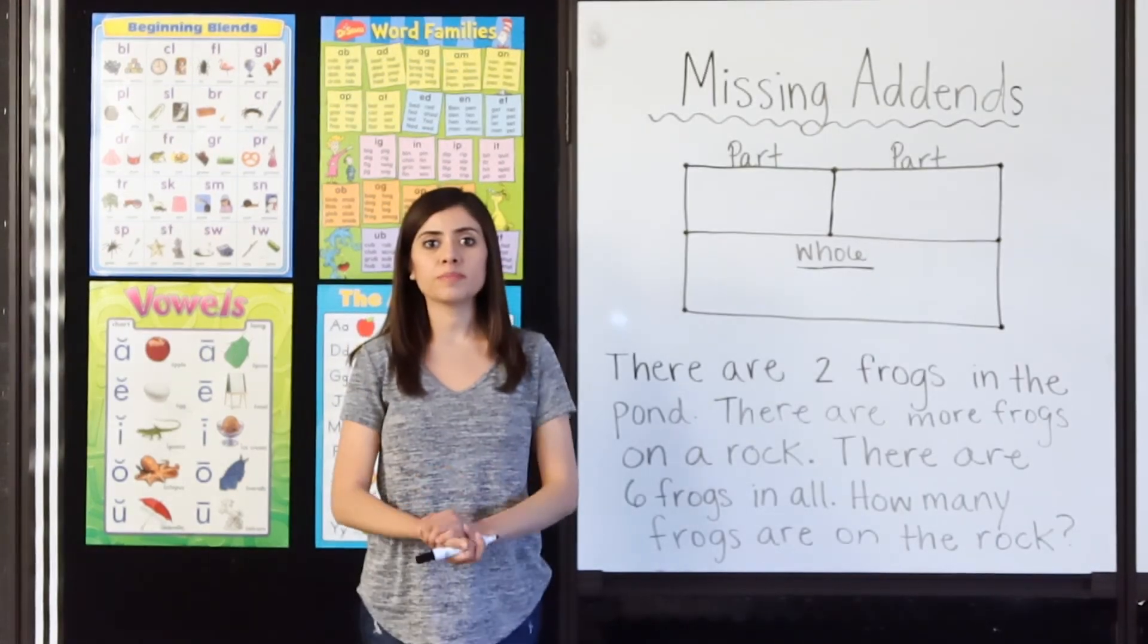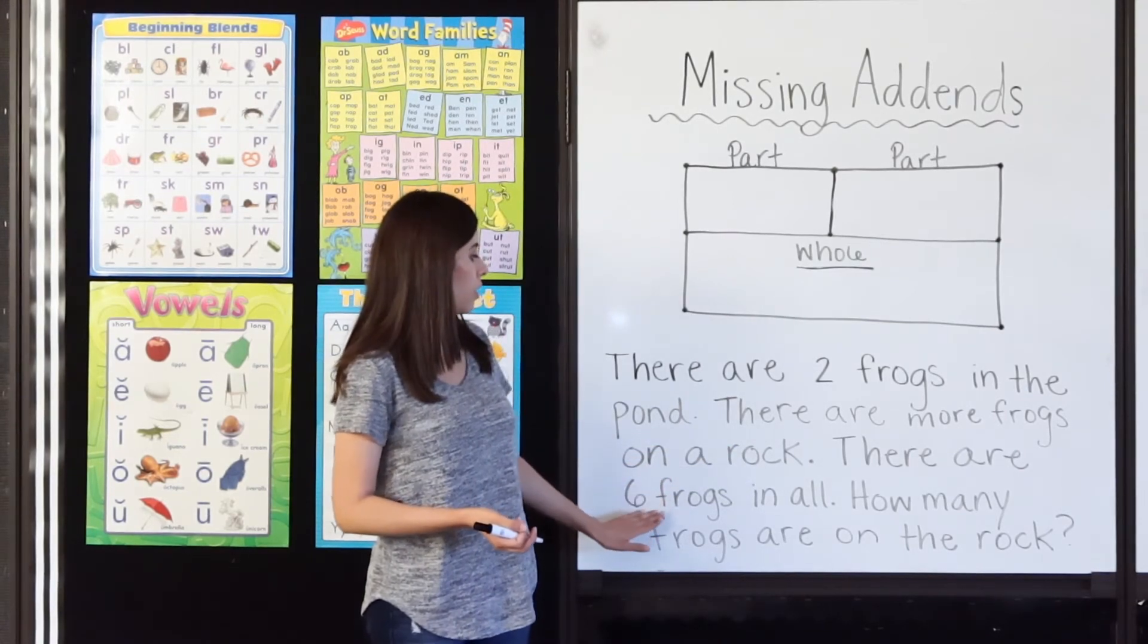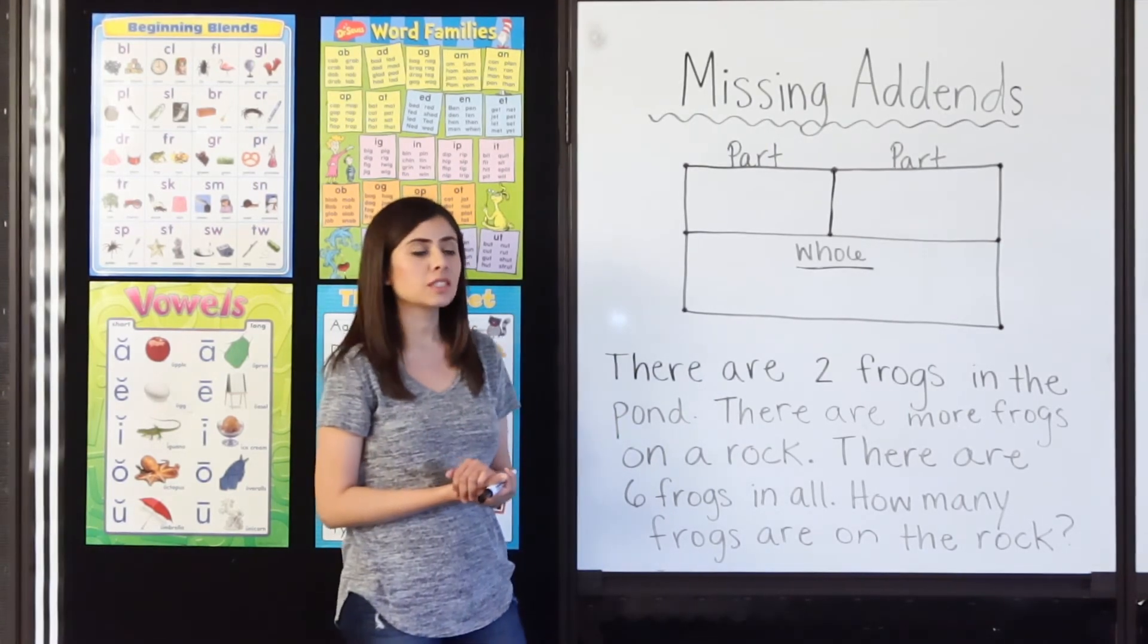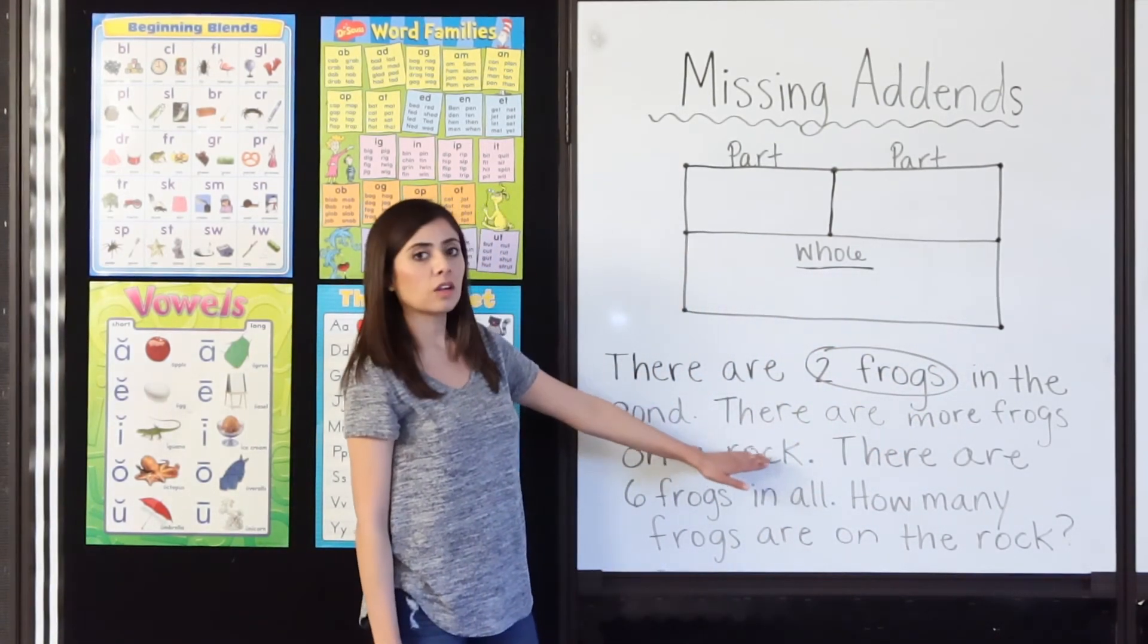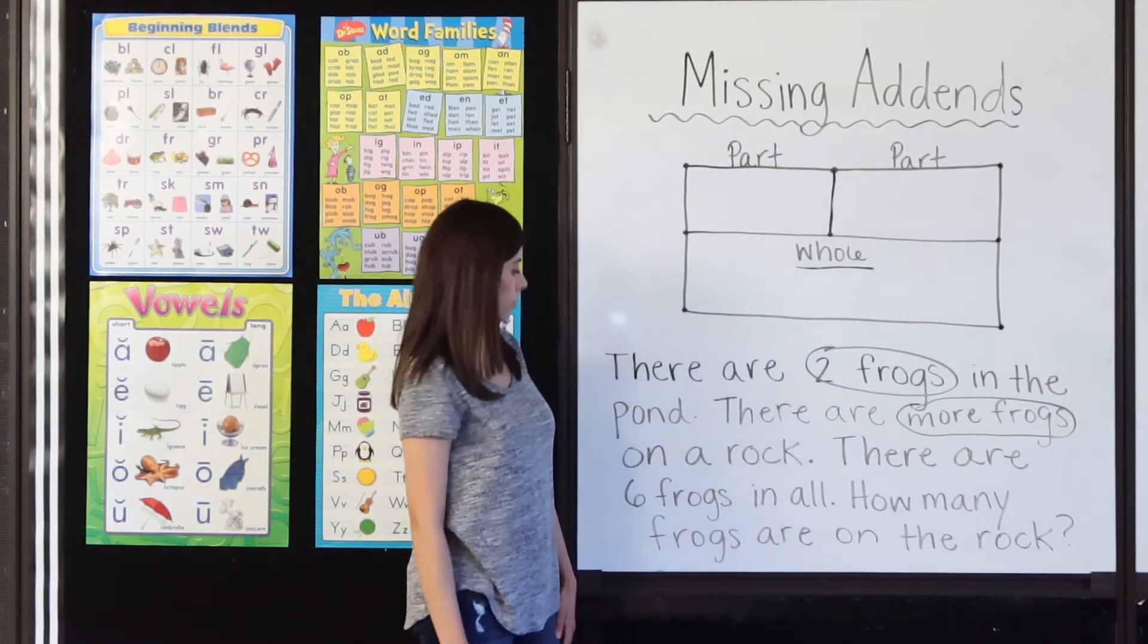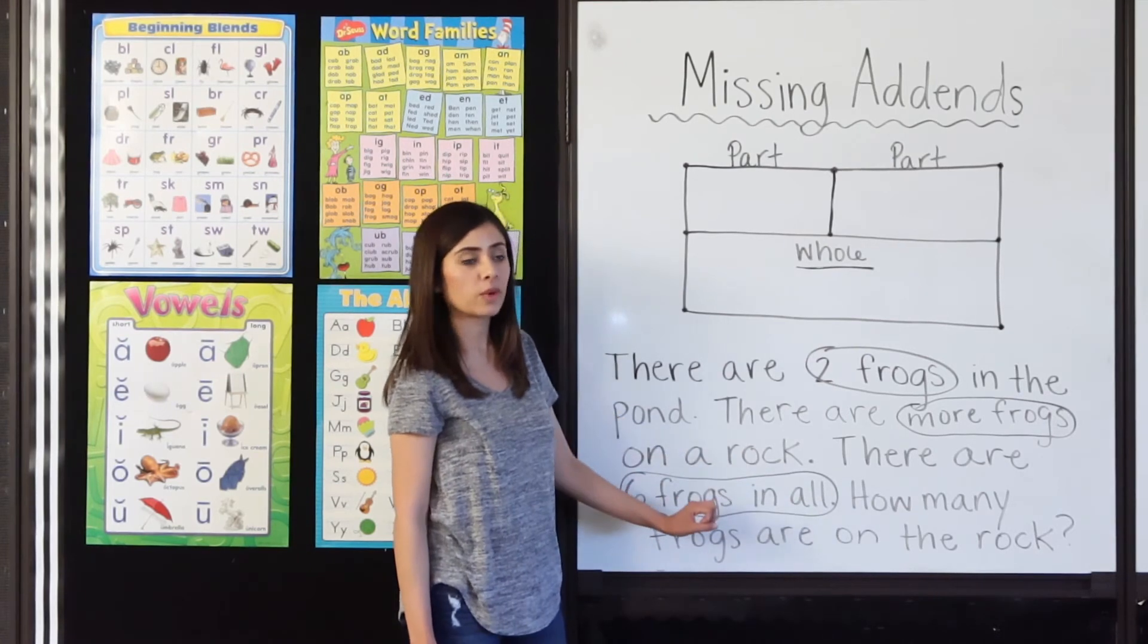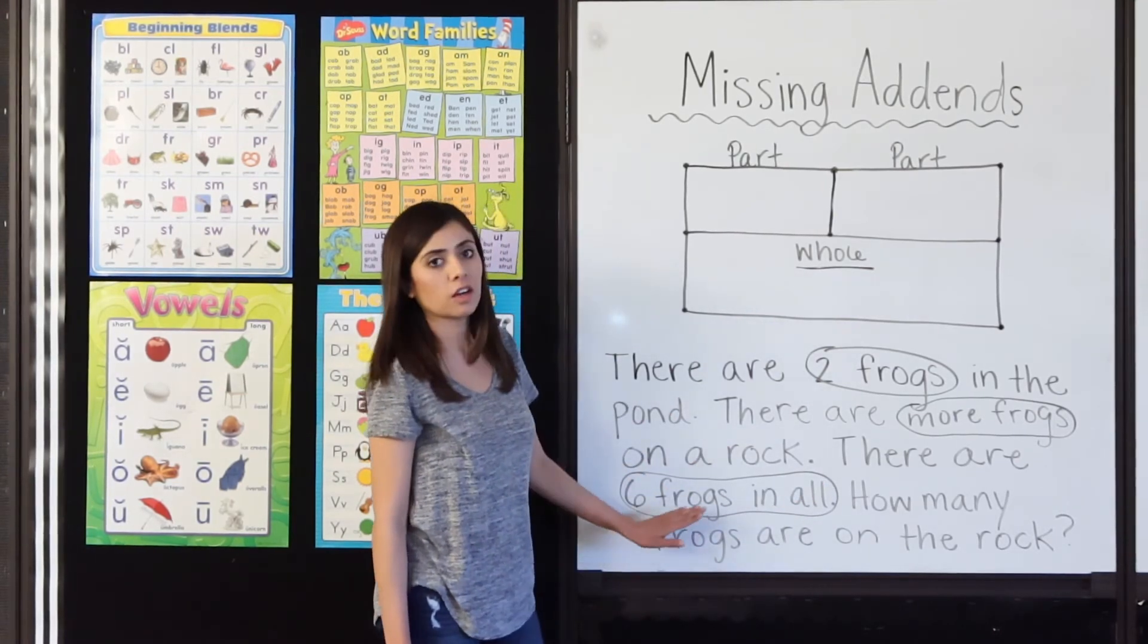Okay, ready for the word problem? It says, there are 2 frogs in the pond. There are more frogs on a rock. There are 6 frogs in all. How many frogs are on the rock? So, let's start by circling what we already know. We know that there are how many frogs in the pond? 2. Circle. 2 frogs. We know that there are more frogs on a rock. So, we have more frogs. We're not finished. There are 6 frogs in all. 6 frogs in all. So, if that's the total, if that's how many we have in all, we know that 6 is our whole, right? We want to know how many frogs are there on the rock.